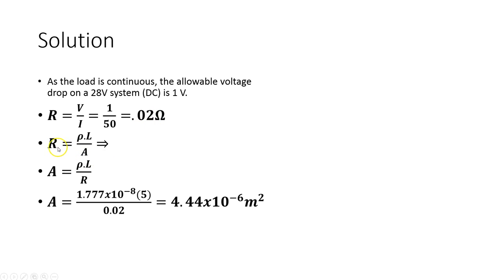I also know that the resistance of the wire is the resistivity times the length all over the cross sectional area. And if I rearrange this equation I can put the cross sectional area out here and put the resistance down here.